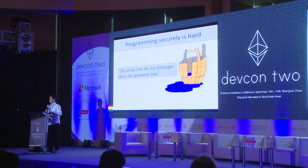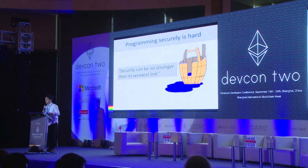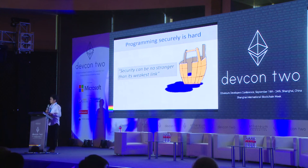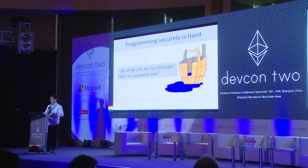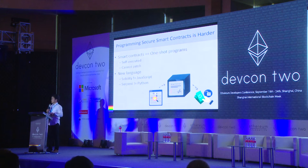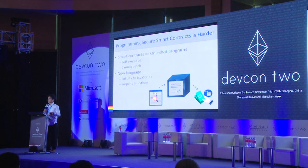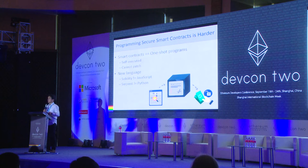Programming security is hard, especially for complex programs, because your system may have multiple components and the adversary can choose to attack any component and exploit your system. That's why people say security can be no stronger than its weakest component. Programming secure smart contracts is even harder. I view smart contracts as one-shot programs because you have only one chance to make it right — once you deploy it, it's nearly impossible to change it if you find any flaw.